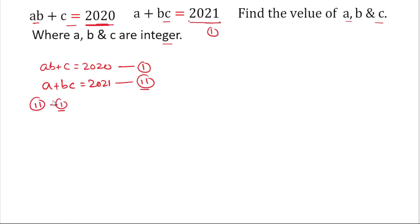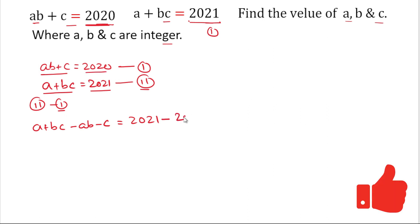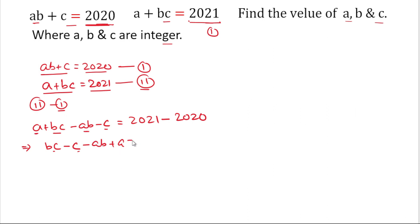Now for solving this, we'll subtract equation 1 from equation 2. We write the left-hand side of equation 2, which is a + bc, then subtract the left-hand side of equation 1, giving minus ab minus c. This equals 2021 minus 2020. After rearranging we get: bc minus c minus ab plus a = 1.